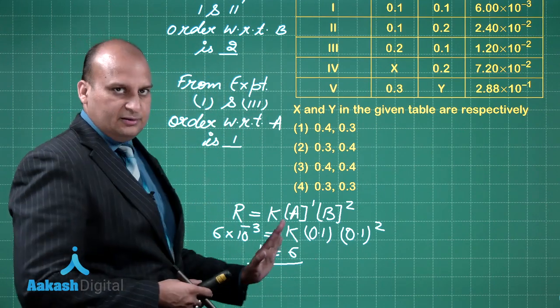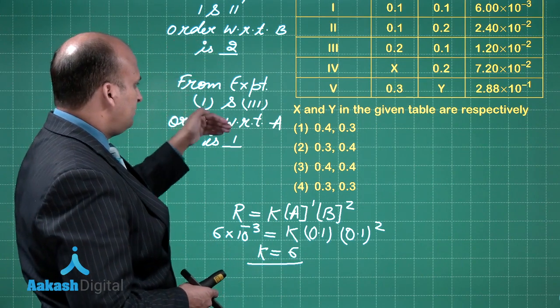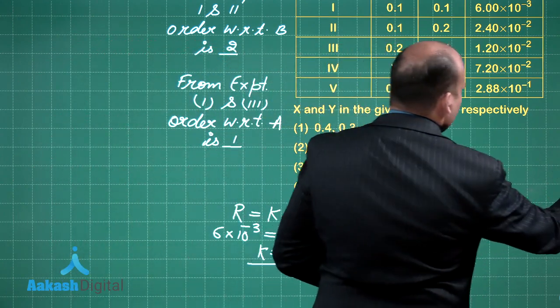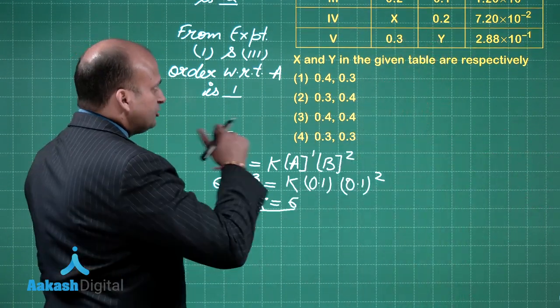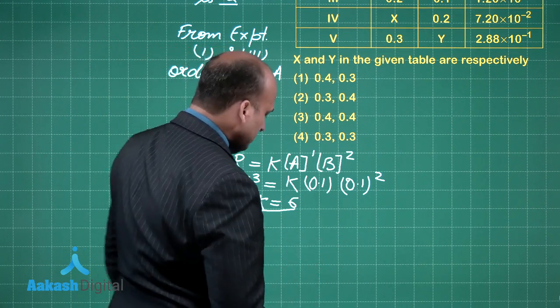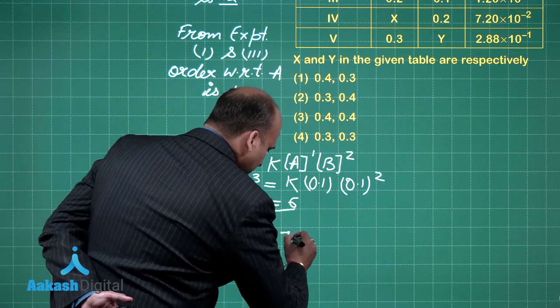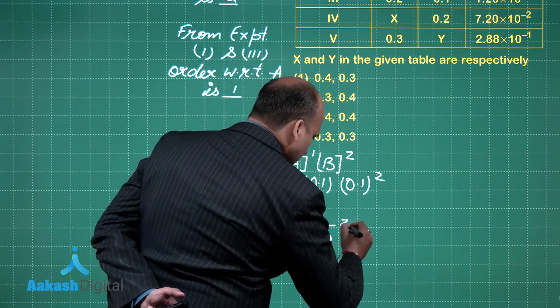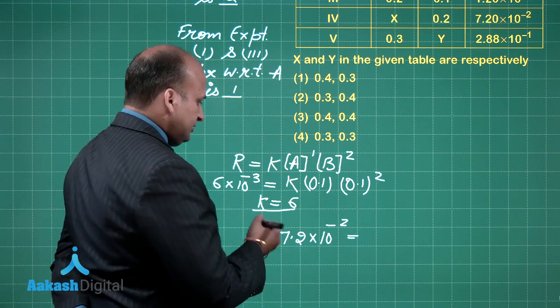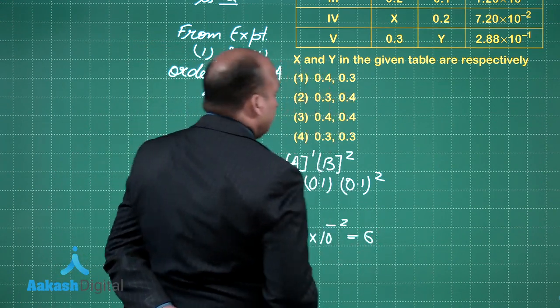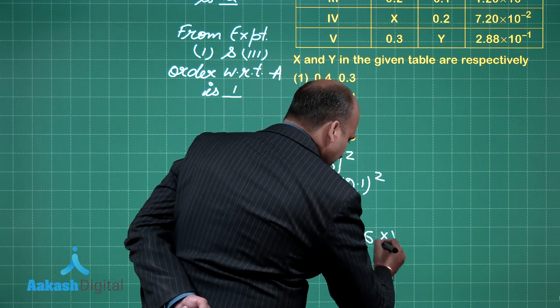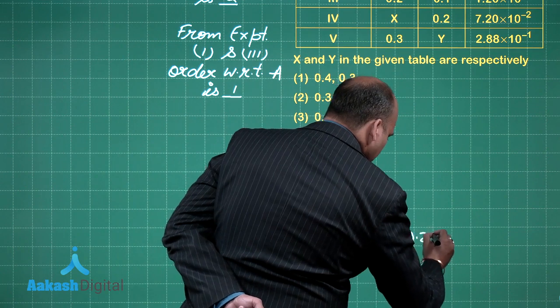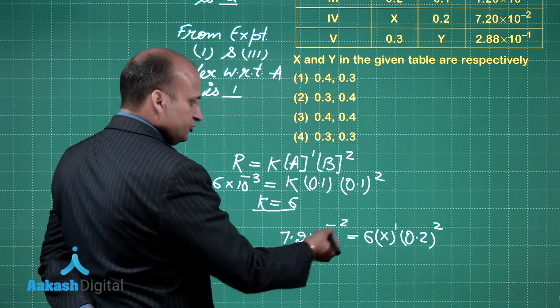The first thing we had to do was calculate the order with respect to A and B. Second, we have to calculate the rate constant. And now, we have to calculate the value of X and Y. Let's look at experiment number 4. The rate is given to be 7.2 into 10 raised to power minus 2. What is the value of K? K is 6. Then we have to put the concentration of A, that is X raised to power 1, then the concentration of B, that is 0.2 raised to power 2. Now we have to solve for X.